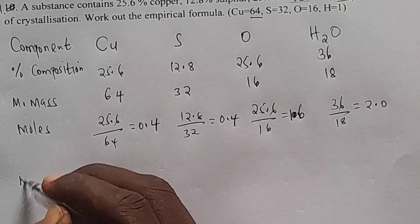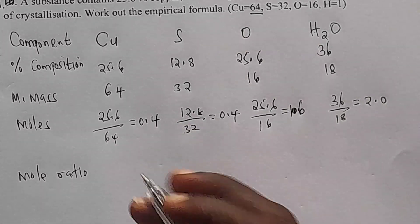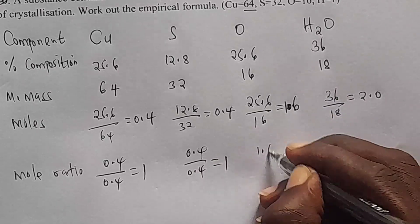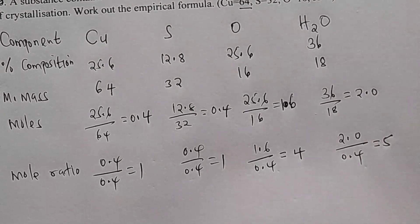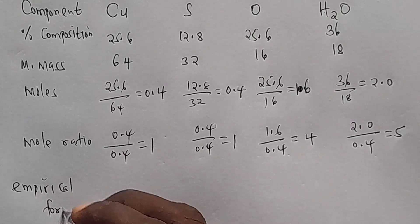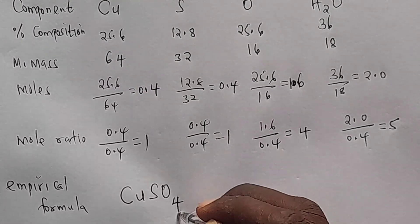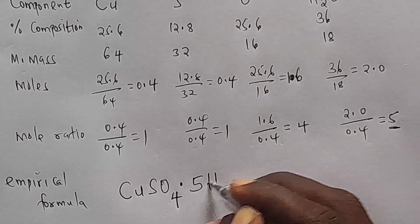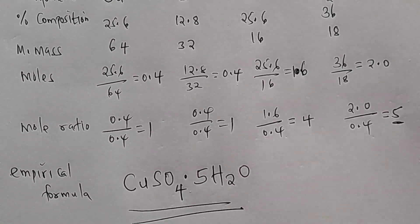Next, mole ratio. The smallest moles value is 0.4. So copper: 0.4 divided by 0.4 gives 1. Sulfur: 0.4 divided by 0.4 gives 1. Oxygen: 1.6 divided by 0.4 gives 4. Water: 2.0 divided by 0.4 gives 5. So the empirical formula is CuSO₄·5H₂O. This is the empirical formula for hydrated copper sulfate — copper sulfate pentahydrate. That's the end.